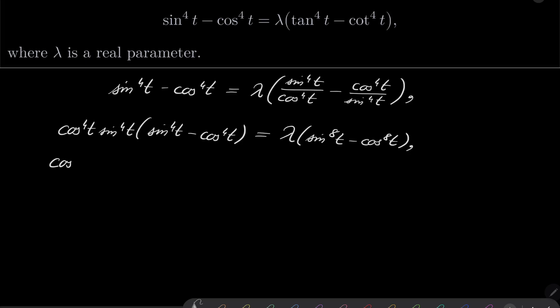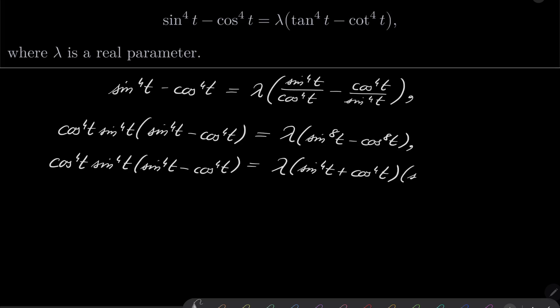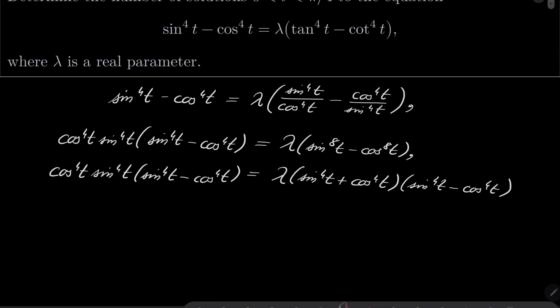Now let's leave the left-hand side as is and factor the right-hand side. We can write sin⁸(t) − cos⁸(t) as (sin⁴(t) + cos⁴(t))(sin⁴(t) − cos⁴(t)). Since t is from 0 to π/4, sine is less than cosine, so the factor (sin⁴(t) − cos⁴(t)) is negative. We can divide by it — no solutions are lost.